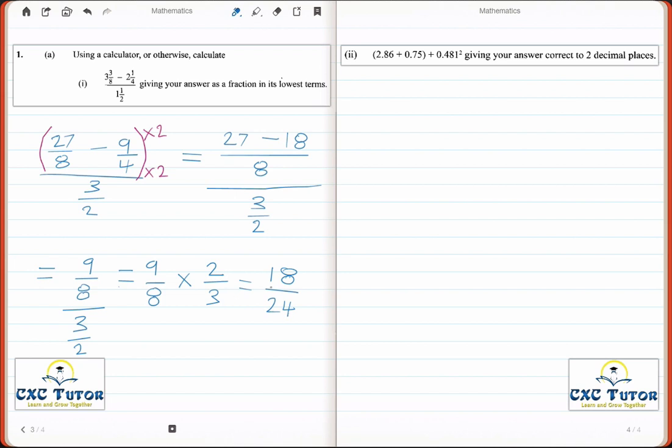But our question specifically said to write it in its lowest term. Therefore, 18 cancelled with 24, and I should get a final answer of 3 over 4.